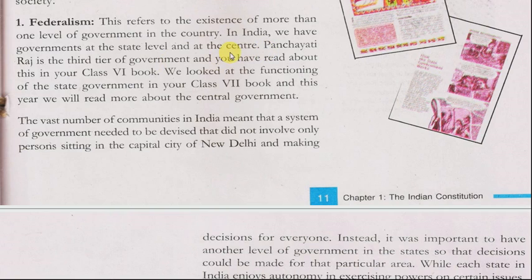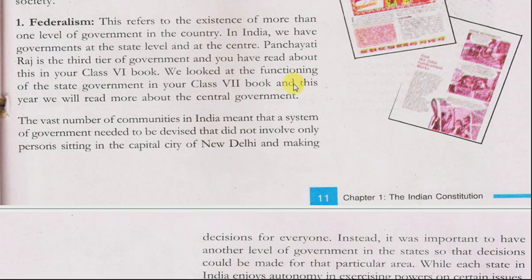In our country, we have a third tier of government, which you will have read about in your Class 6 book. We looked at the functioning of state government in the Class 7 book, and this year we will read more about the central government.